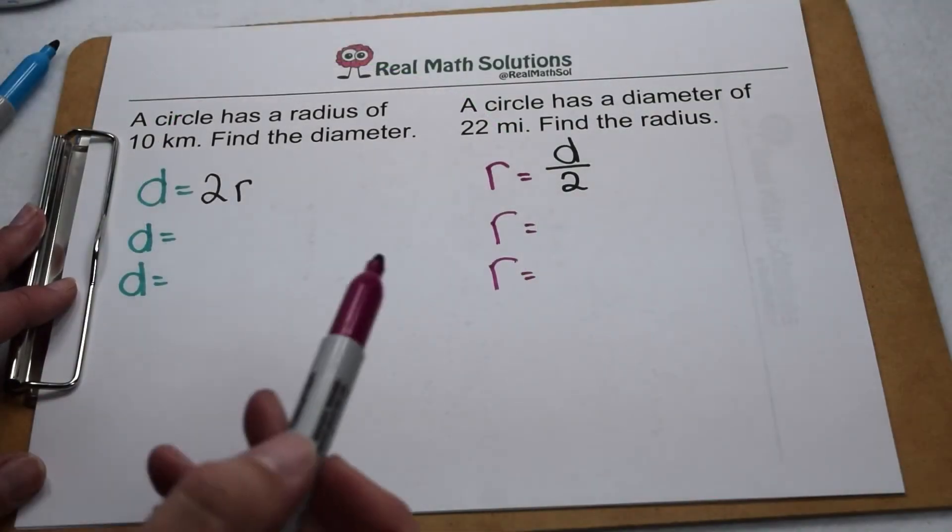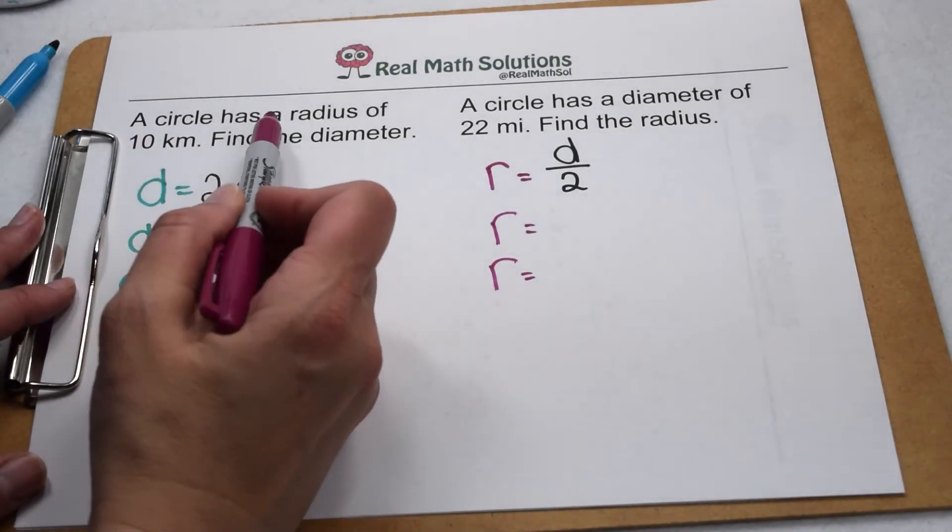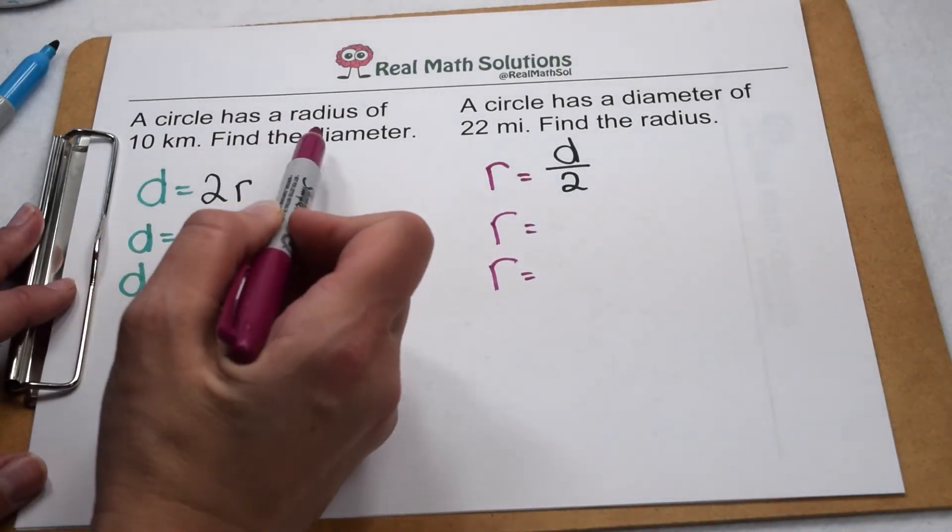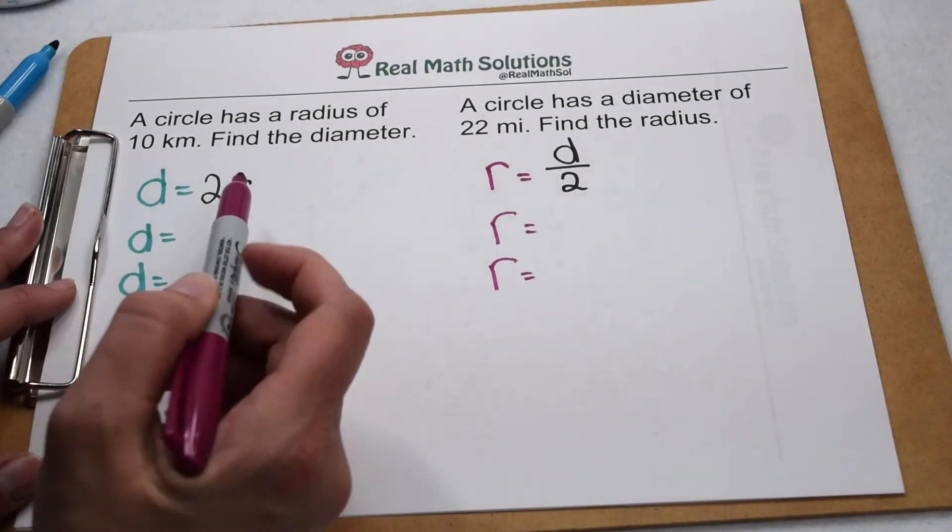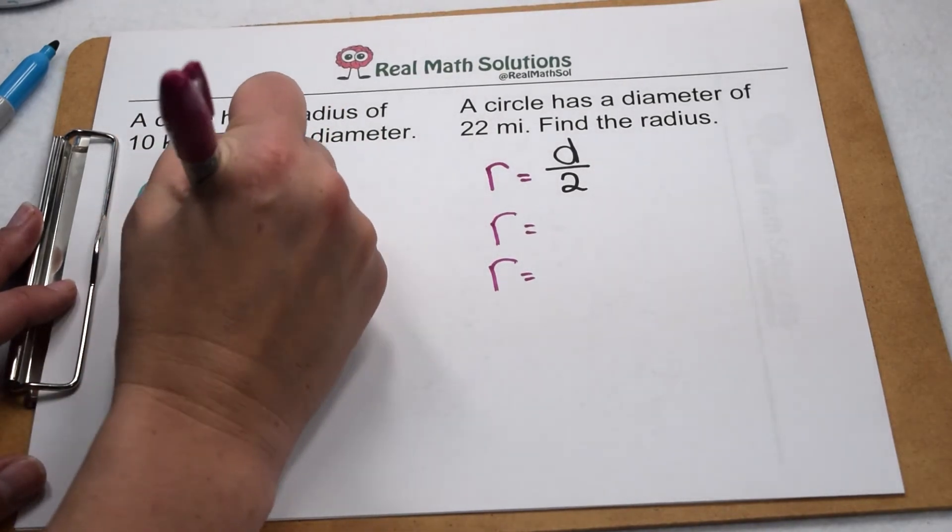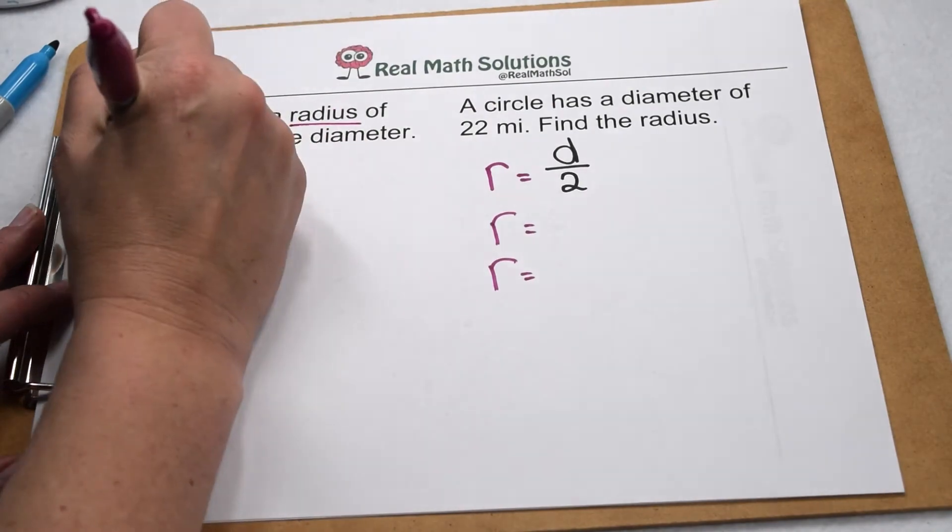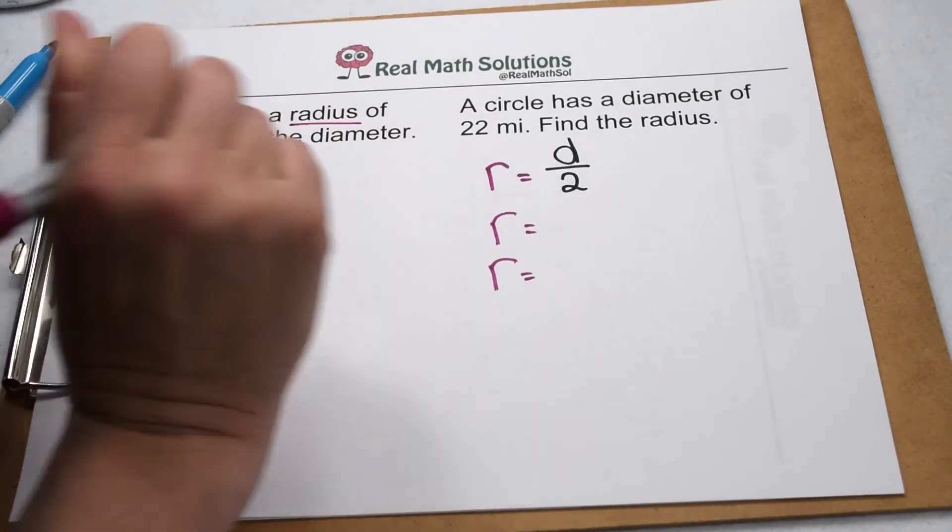Let's use our equations to find the missing values. Here we know a circle has a radius of ten kilometers. We want to find the diameter. Well, we know that our diameter is worth twice the radius. So that means we need to multiply two times our radius of ten kilometers. So two times ten.